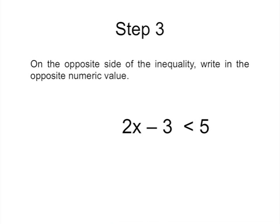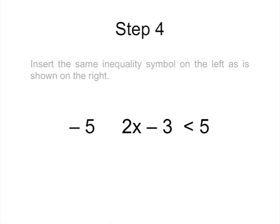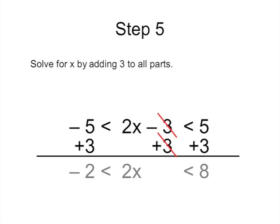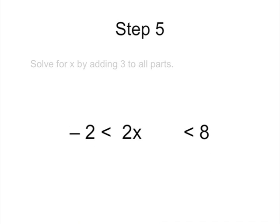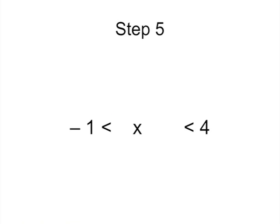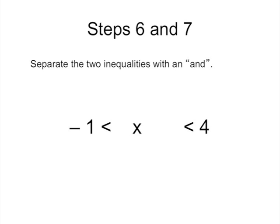Then, on the opposite side of the inequality write in the opposite numeric value. The next step is to insert the same equality symbol on the left as shown on the right. Then, solve all for x by adding three to all parts and dividing by two on all parts. And finally, separate the two inequalities with the word 'and'.